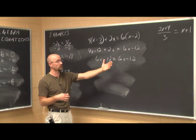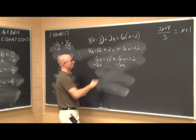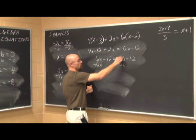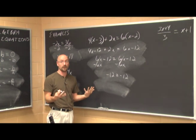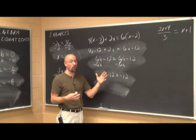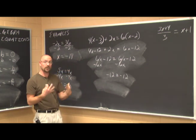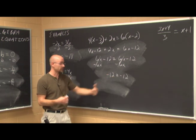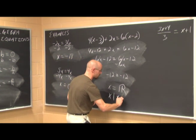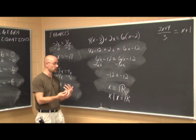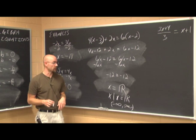But what if we didn't recognize that? Our goal is to isolate the variable, so let's subtract 6x from both sides. There are no more x's on either side, leaving negative 12 equals negative 12. This is a true statement — no matter what x is, negative 12 will always equal negative 12. That tells us x is any real number. In set notation: x such that x is any real number. In interval notation: from negative infinity to positive infinity.